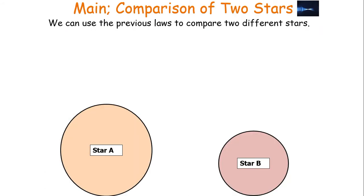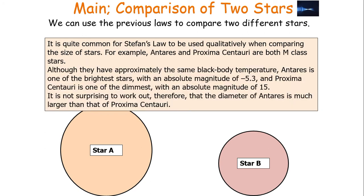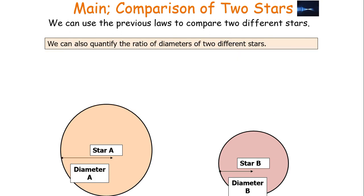We can use these laws to compare two different stars, such as star A and star B. The laws tell us that if two stars have the same black body temperature — and are therefore the same spectral class — the star with the brighter absolute magnitude must have the larger diameter. For example, Antares and Proxima Centauri are both M-class stars, so they have the same black body temperature. However, Antares is one of the brightest stars with an absolute magnitude of −5.3, while Proxima Centauri is one of the dimmest with an absolute magnitude of 15. Therefore, the diameter of Antares is much larger than that of Proxima Centauri.